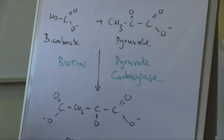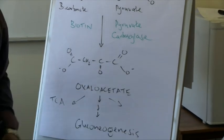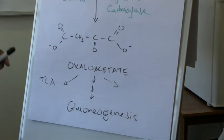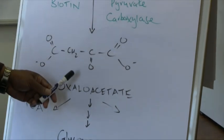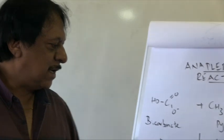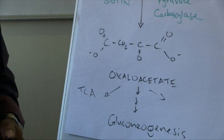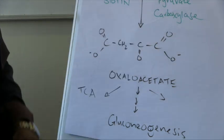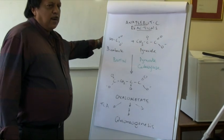This oxaloacetate will replenish TCA cycle intermediates, but it also serves as a very important substrate for gluconeogenesis, a pathway we will deal with in later parts of this series. If someone is dependent on gluconeogenesis to maintain blood sugar and they lack biotin, this reaction will not occur, impairing gluconeogenesis and potentially resulting in hypoglycemia. Do not confuse pyruvate carboxylase with acetyl-CoA carboxylase — acetyl-CoA carboxylase plays an important role in fatty acid synthesis, and students often confuse these two enzymes.